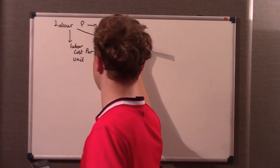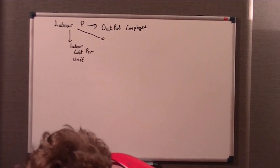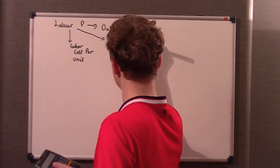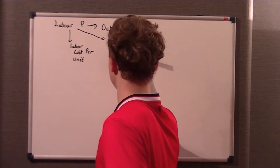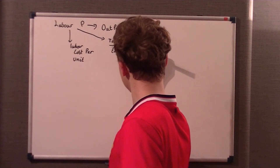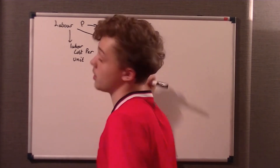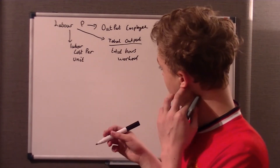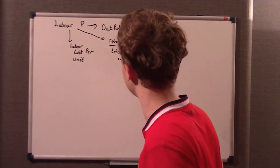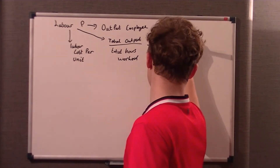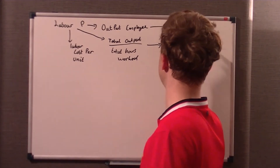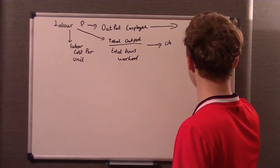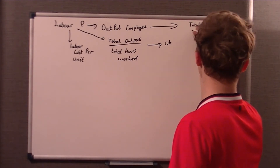Another way to measure labour productivity is to compare the whole country against other countries. For the UK, that's total output over total hours worked. We use hours rather than number of people because some people only work part-time, and including them as whole employees would skew the results. That gives you UK productivity.